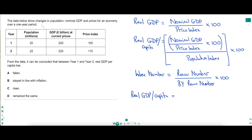It's another question with data. The first few lines are waffle describing what our eyes can see in the table. The question is: from the data, what has happened to real GDP per capita between year one and year two? So we need to work out real GDP per capita in year two. Real GDP is nominal GDP divided by a price index, times 100. For real GDP per capita, take the real GDP equation and divide by a population index, times 100 — keeping all numbers in index form. To convert a number to index form: take the raw number, divide by the raw number in the base year, multiply by 100.